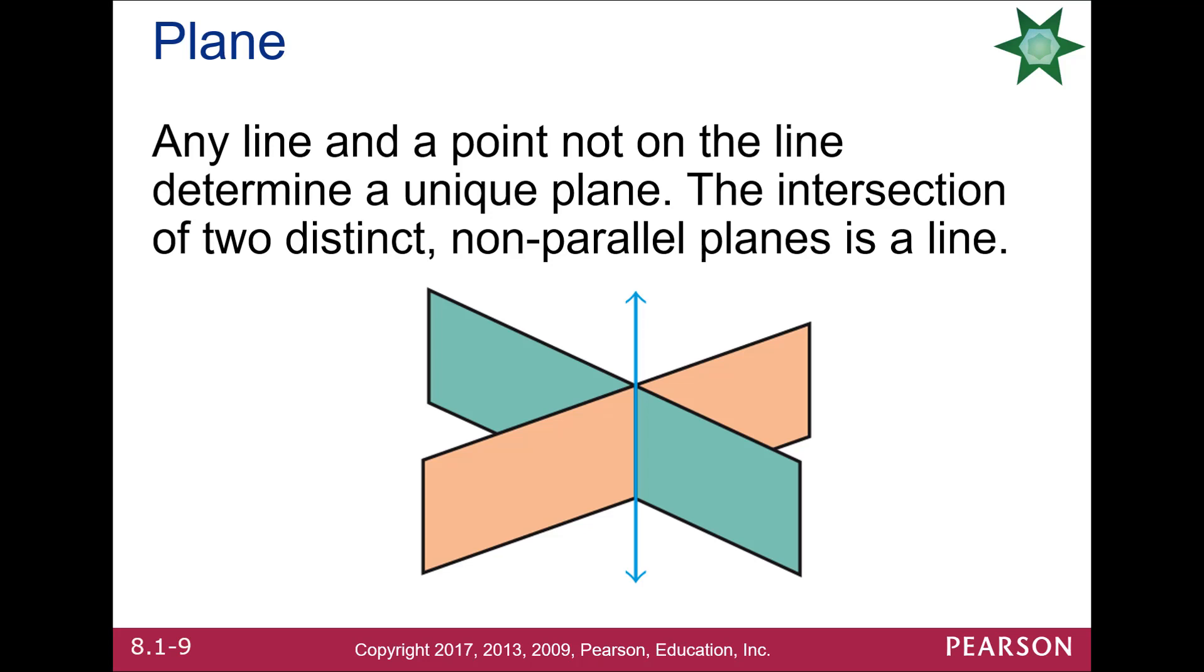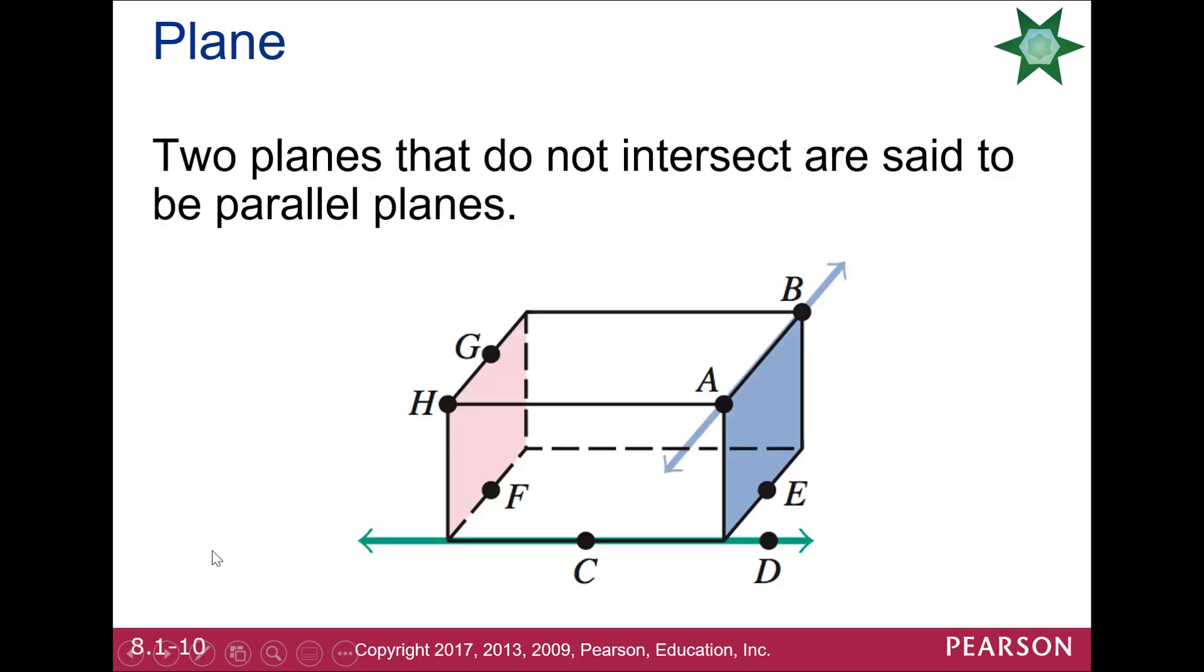If you intersect two planes, you're going to see that it forms a line. If you have two planes that don't intersect, they're parallel, like the ends of an Amazon.com box.